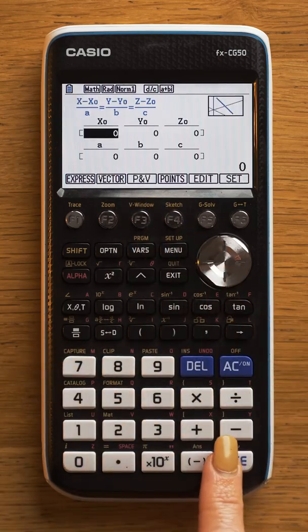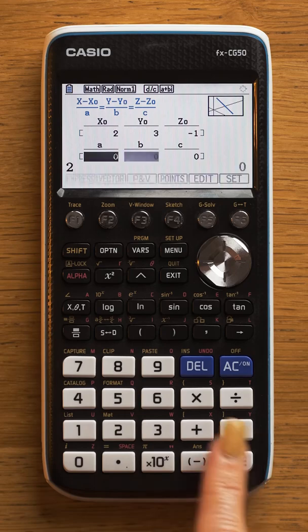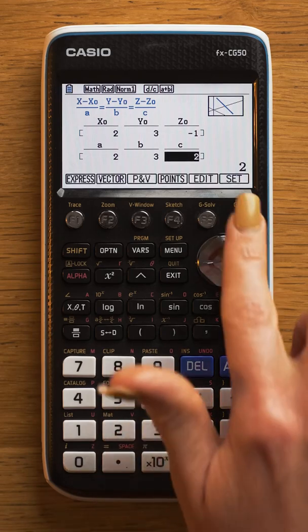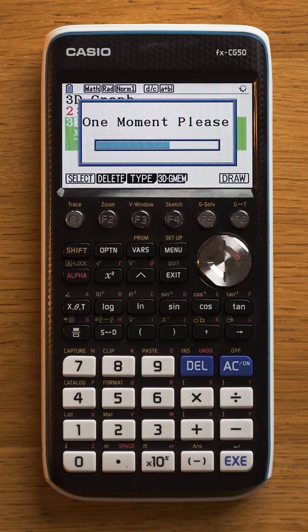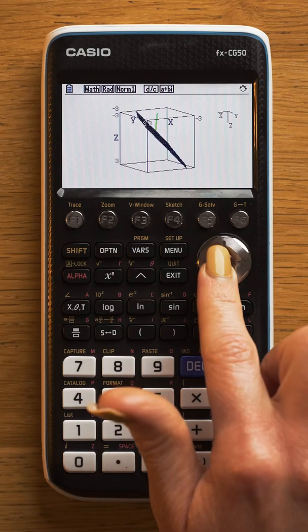Similarly, you can type in the equation of a line by entering the data exactly the same way. And you can actually draw them together. See, now I've got my line and my plane.